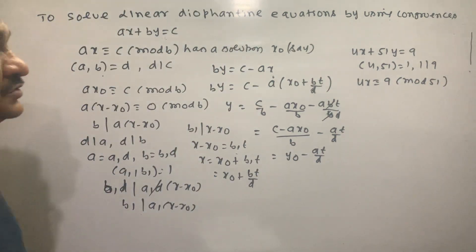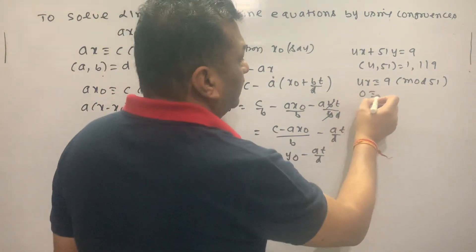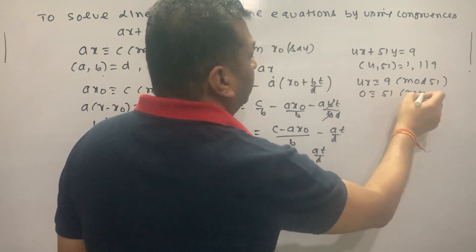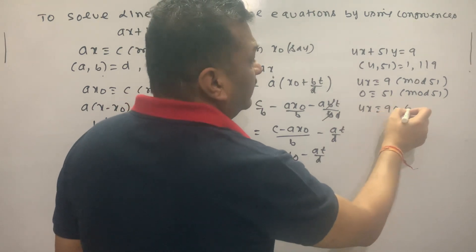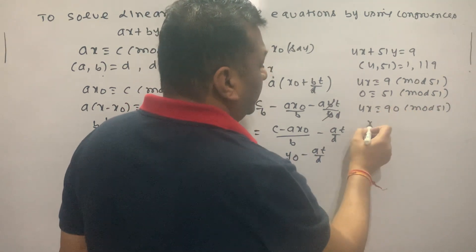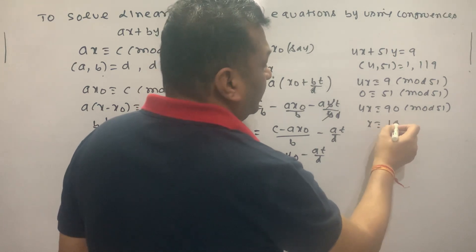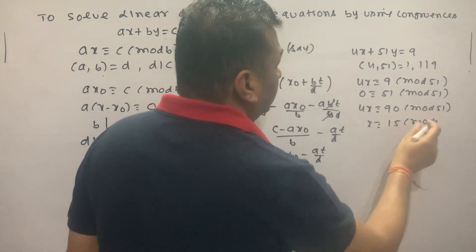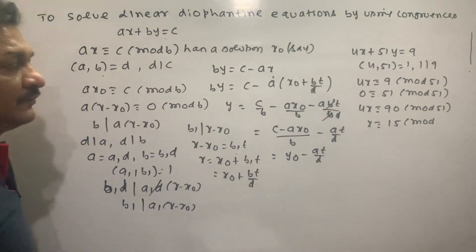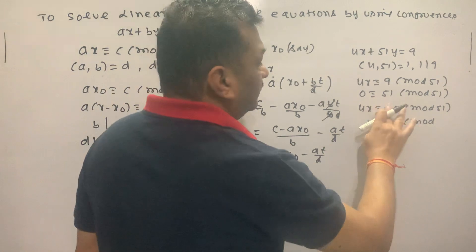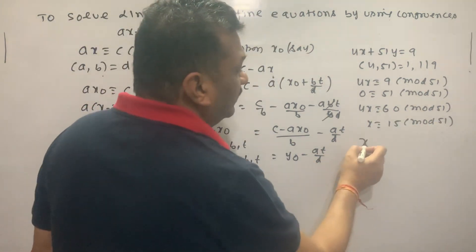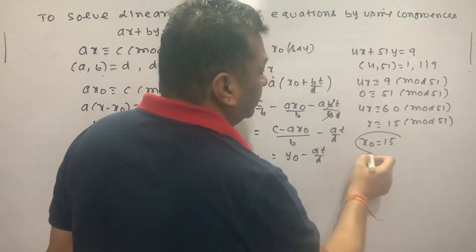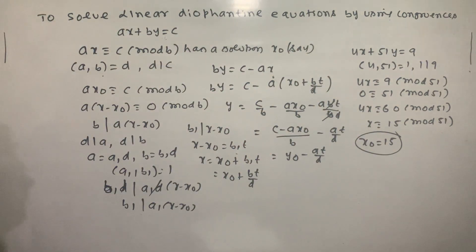Zero congruent 51 mod 51. So we add: 4X congruent 60 mod 51. X congruent 15 mod 51. We can find specific values for X and corresponding Y values from this congruence.